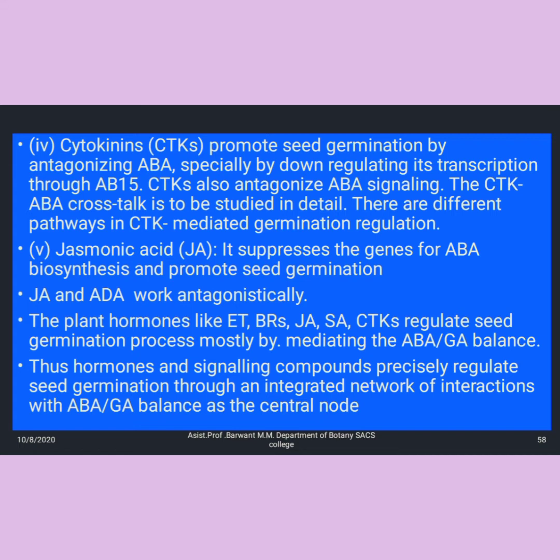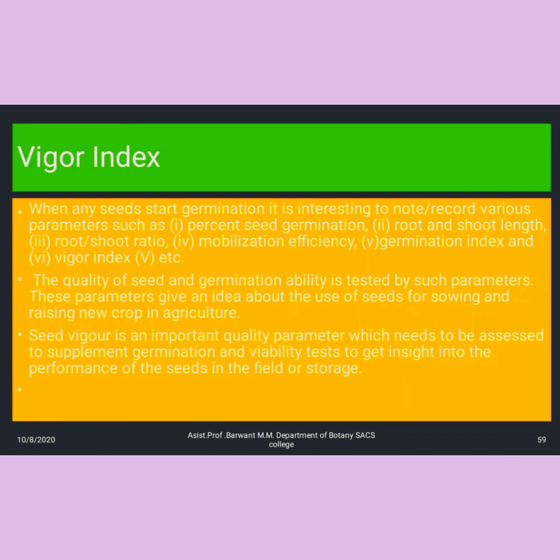Jasmonic acid suppresses the genes for ABA biosynthesis and promotes germination — JA and ABA work antagonistically. Plant hormones like ethylene, brassinosteroids, GA, salicylic acid, and cytokinins regulate the seed germination process, mostly by mediating the ABA and GA balance. Thus, hormone signaling components precisely regulate seed germination through an integrated network of interaction, with the ABA and GA balance as the central node.